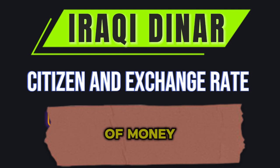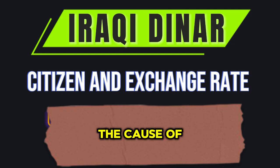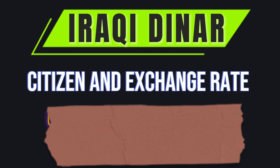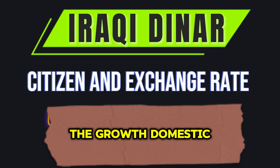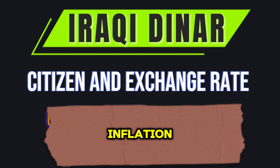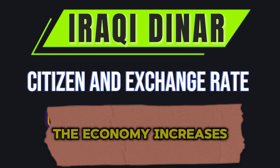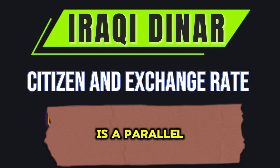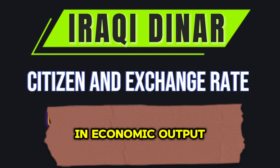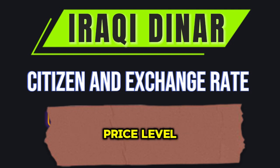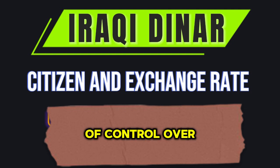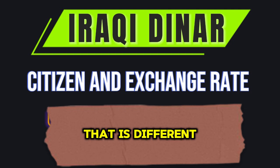The quantitative theory of money is based on the principle of the neutrality of money, which explains that the cause of inflation in the long term is money itself. Growth in the money supply in a way that is not commensurate with the growth in the gross domestic product leads to either inflation or contraction in the general price level. If the amount of money in the economy increases and there is no parallel increase in economic output, this will lead to an increase in the general price level and a loss of control over exchange rates, even if the state sets the exchange rate differently from what is sold in the market.